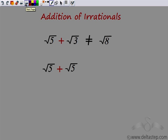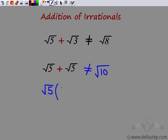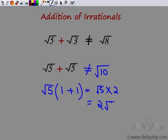Now, let us look at √5 + √5. Again, I can definitely say this is not equal to √10. You cannot add it like integers. But what you can do is notice that √5 is common in both terms, so I can take √5 outside. Taking √5 common from both terms leaves me with 1 + 1, which is 2. So this gives me √5 × 2, which is the same as 2√5. So √5 added to itself is 2√5.